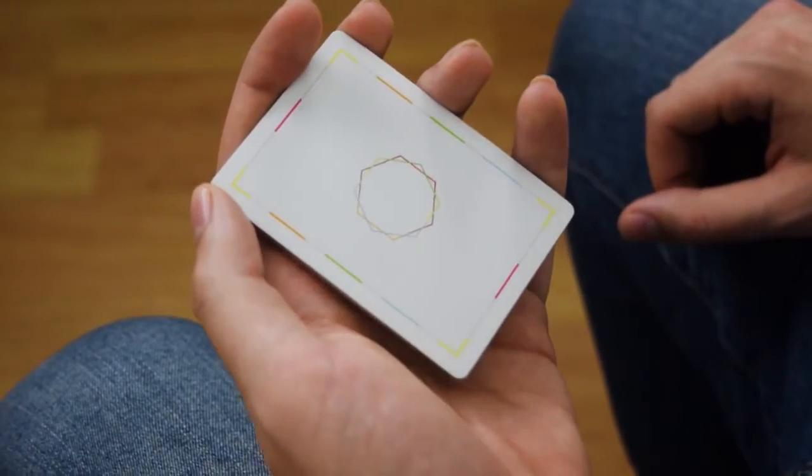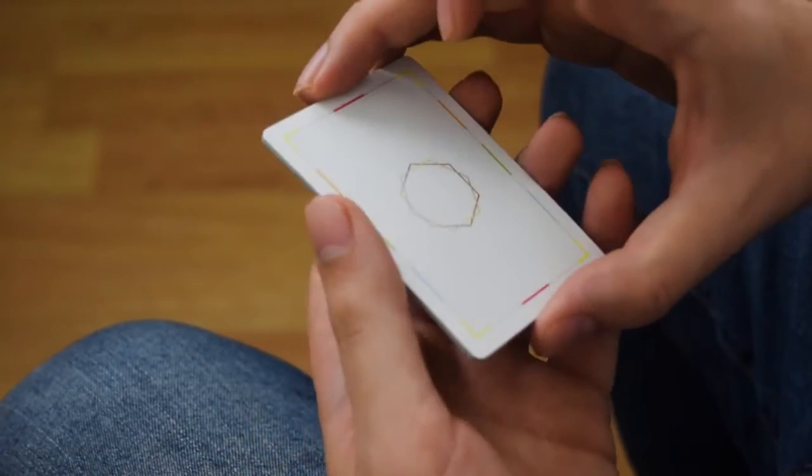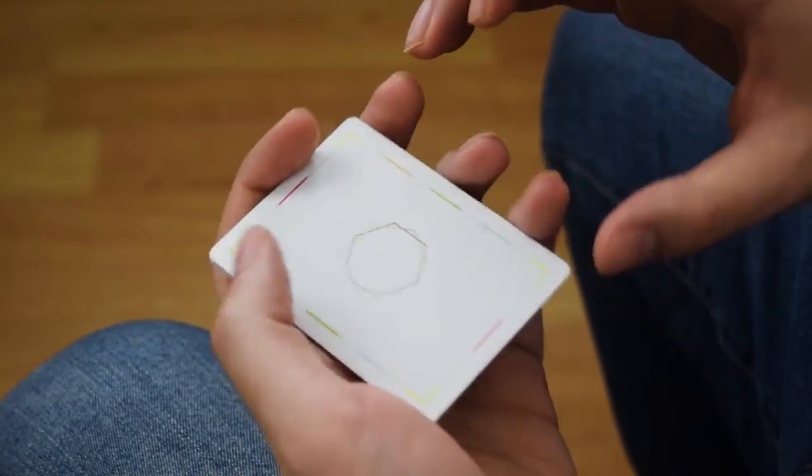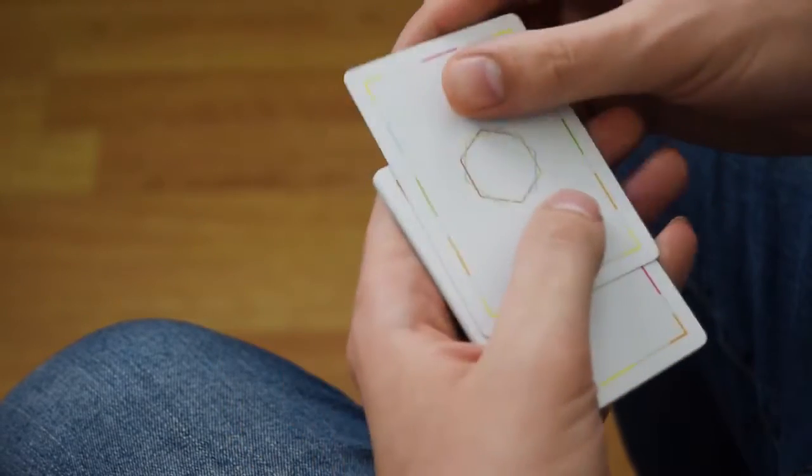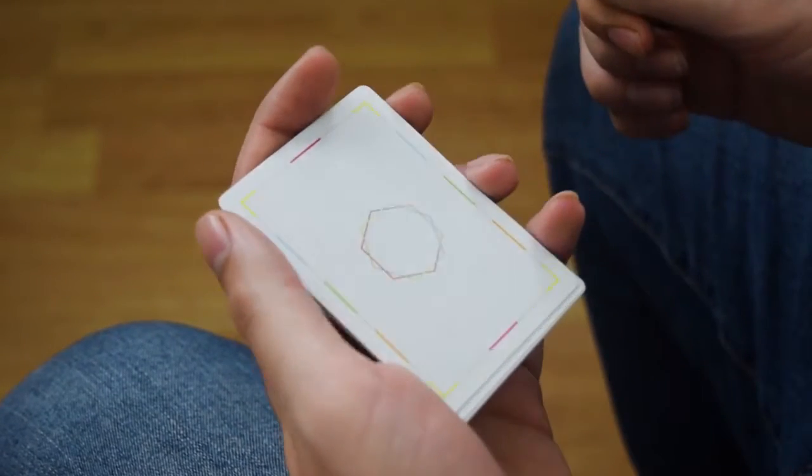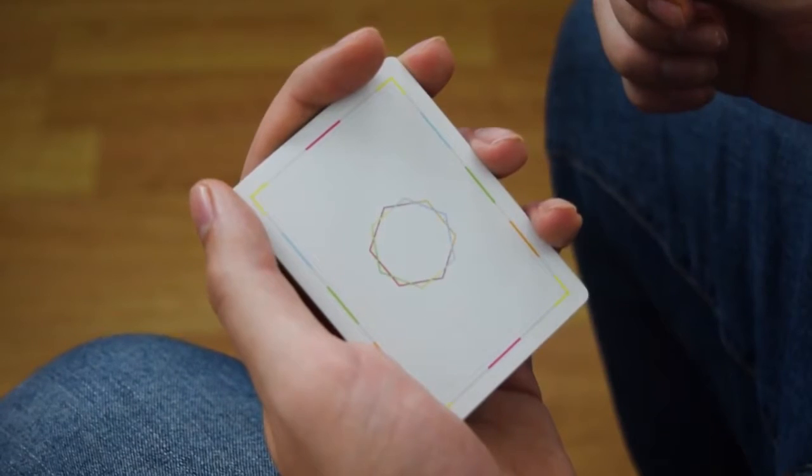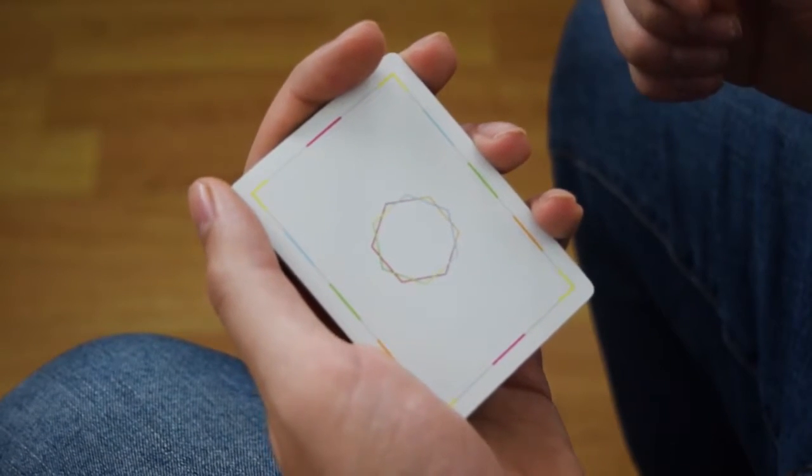Each one of these points is designed for the most common contact points in cardistry for the edges. If you take each card and rotate it end for end and shuffle it back in the deck, it actually creates another back design, giving you ten different back designs in one deck.